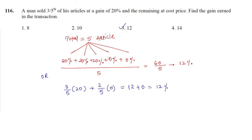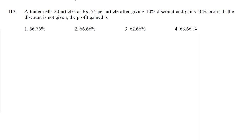Let's have a look at question number 117. A trader sells 20 articles at Rs 54 after giving a discount of 10%, and he gains 50% profit. If the discount is not given, the profit earned is how much? So let's have a look. The selling price per article is Rs 54 and the discount offered is 10%.